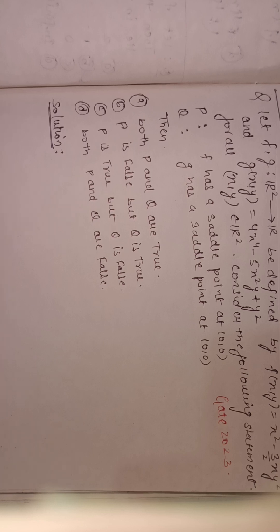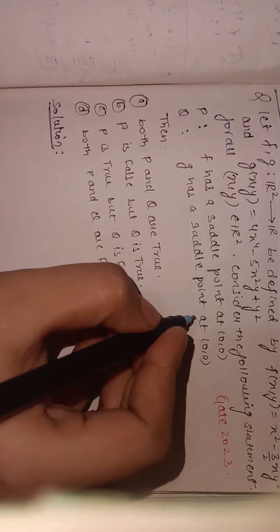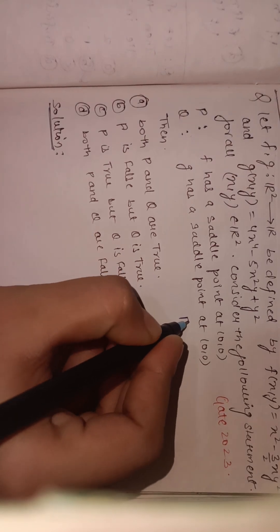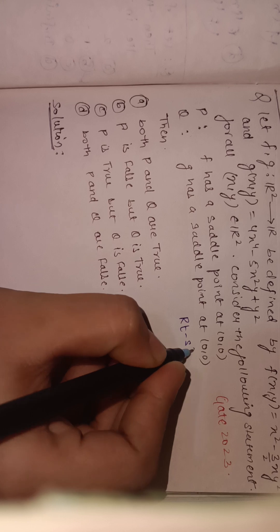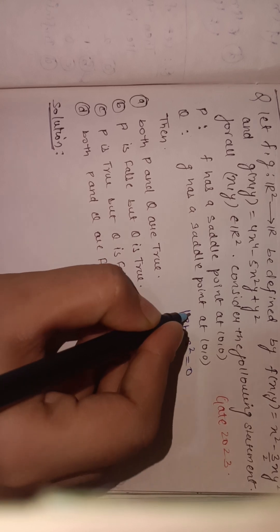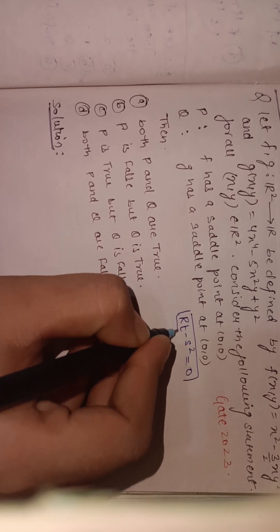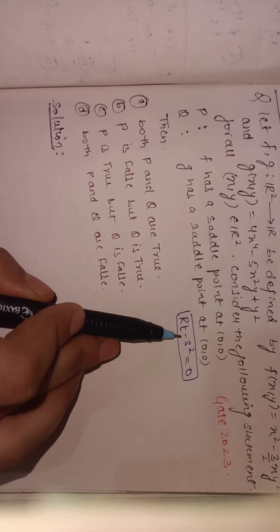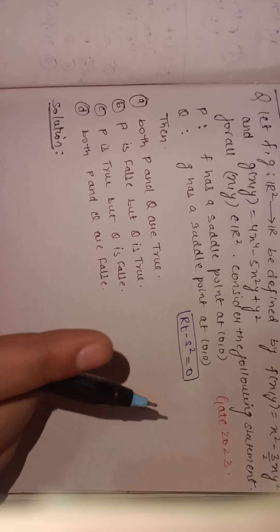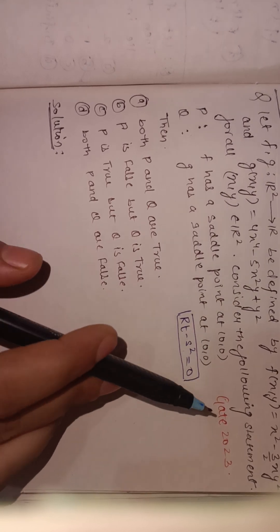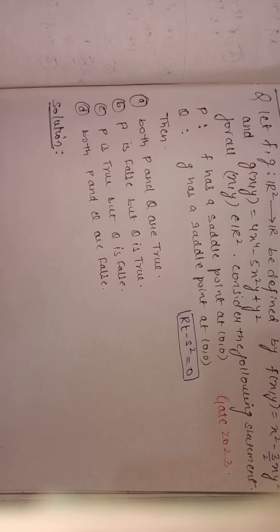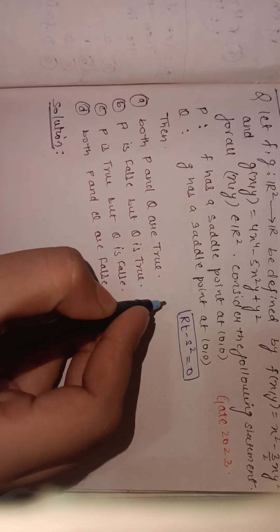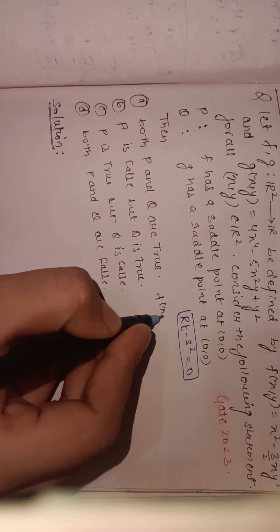To identify a saddle point we need to know the condition that rt - s² should equal zero. If this condition is satisfied, we then examine the neighborhood of that point (0,0), and if the function attains neither a maximum nor a minimum there, we say that point is a saddle point. So first we check f(x,y).